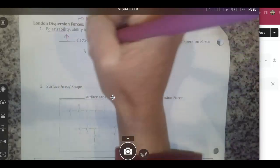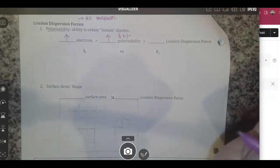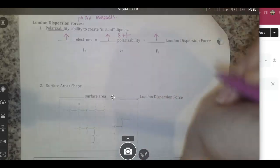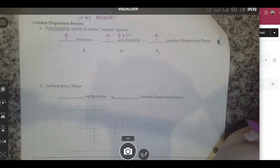So more electrons, more charges can be created. Therefore, you can have a greater or stronger London dispersion force.